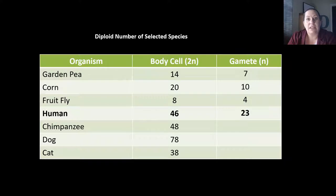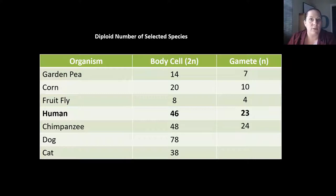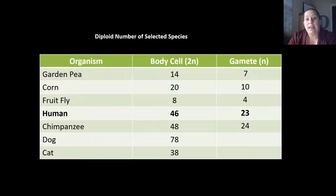Chimpanzees have 48 chromosomes, so dividing by two gives them 24. Dogs have 78 chromosomes — this is why you have such a wide range of dogs from Great Danes all the way down to chihuahuas; it has to do with the huge number of chromosomes they contain. N for dogs is 39. And a cat has 38 chromosomes, so N is 19.